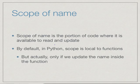By default in Python, scope is local to a function. We saw that if we use a name inside a function, then that is different from using the same name outside the function. But actually this happens only when we update the name inside the function.